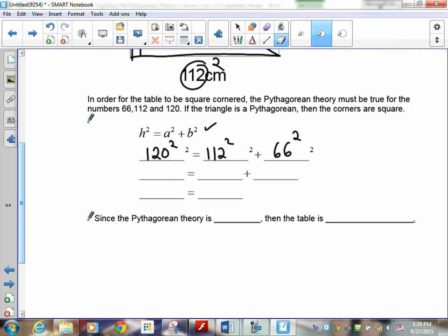I already got squareds in there, so I can take out the one I put in there. So there's 120 squared, and 112 squared, and 66 squared.